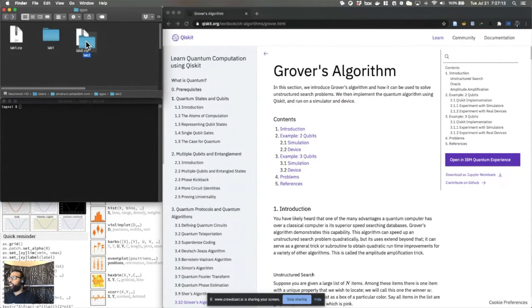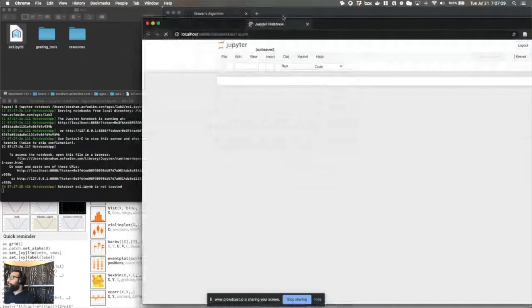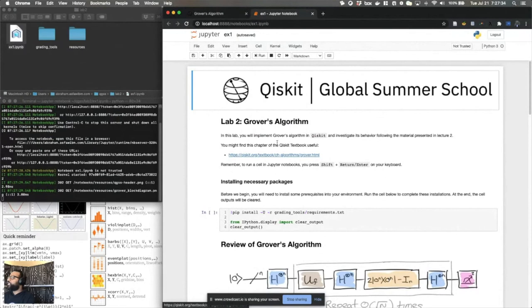Looking in the folder, there should be an exercise called exercise one within that zip file. I'm going to use Jupyter notebook as I did yesterday to show you what's in this notebook. And if I do that, this is what the notebook looks like when I open it. The structure is exactly like I showed you in the slides before, where you have Grover's algorithm.